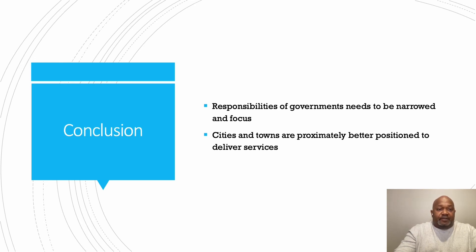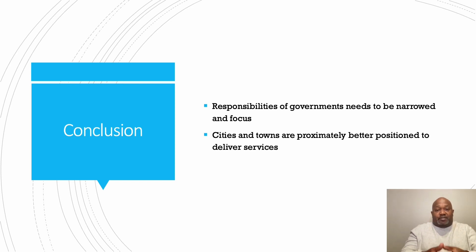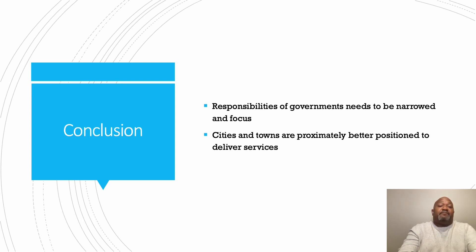In conclusion, it's important to understand that in a large country like the United States, the responsibilities of government need to be narrow and focused. There is a national government with Congress that passes laws dealing with the nation as a whole; those laws are implemented by individual states. States create smaller structures known as counties with their own leadership. Counties in turn have cities and towns within their borders. Cities and towns are really that last level of governance — most proximate to citizens and best positioned to deliver services.